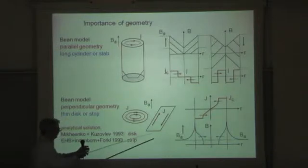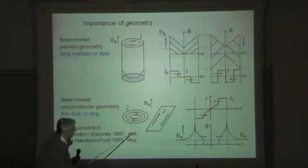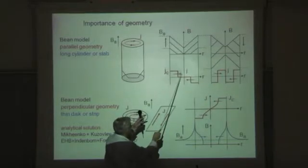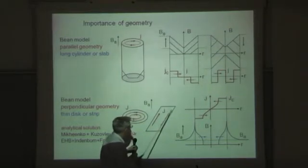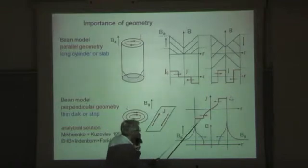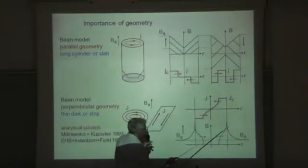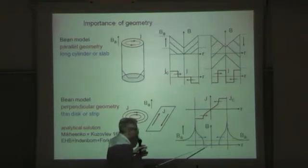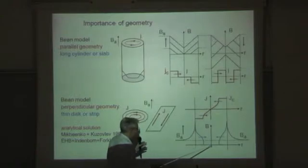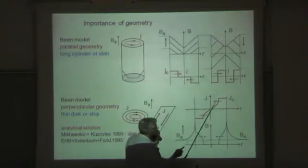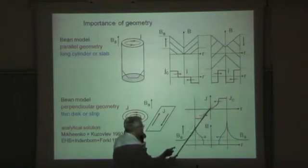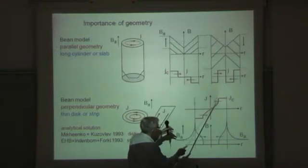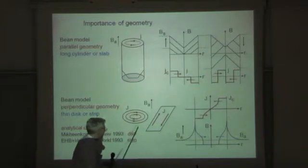And interestingly, the solution, how this current density, or this is now not exactly the same current density, it's a sheet current density, it's a current density integrated over thickness, it has this profile. So it's constant at the edge where vortices have penetrated. And then here in the middle where you still have no vortex penetrated, where there is no field. And where there is no field, there is a sheet current. So when you integrate over thickness, you'll find a current which has this curve of an arc, of arcus sinus, for instance. And the interesting thing is that for disc and strips, this analytic function is exactly the same.